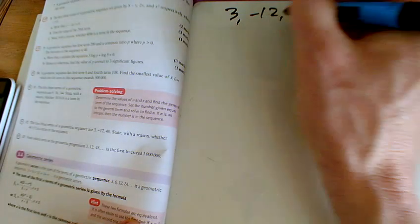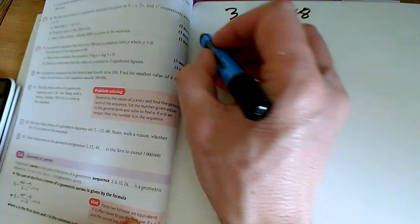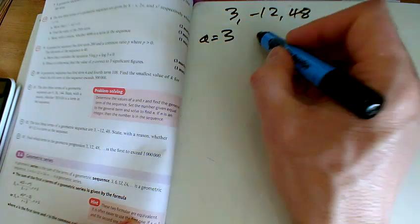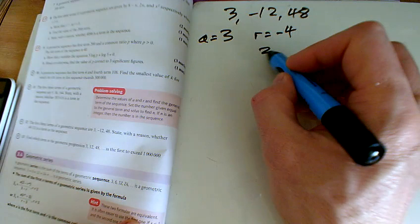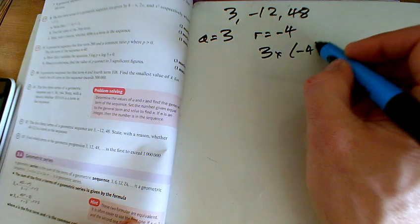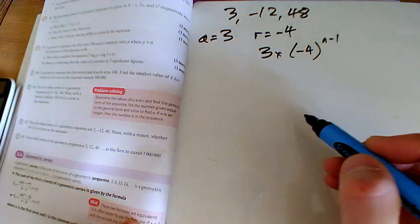Now question 12, we've got the sequence 3, then minus 12, then 48. So I've got A is 3, the ratio each time is minus 4, and so the nth term is 3 times minus 4 to the power of n, take away 1.